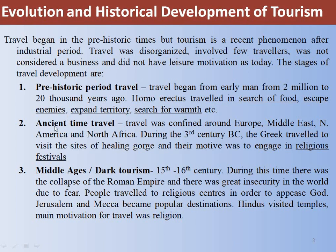The next stage is Ancient Time Travel, which was confined around Europe, Middle East, North America, and North Africa. During the 3rd century BC, the Greeks traveled to visit sites and their motive was to engage in religious festivals. People from different parts of the world traveled mainly to attend religious festivals.